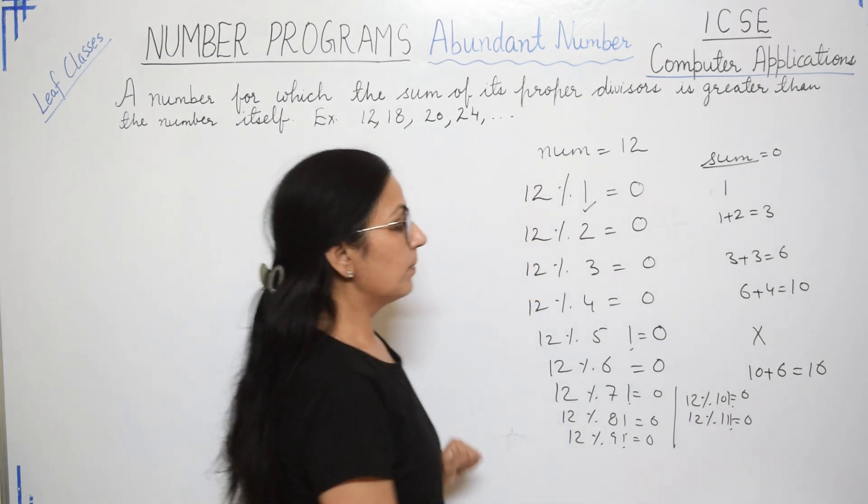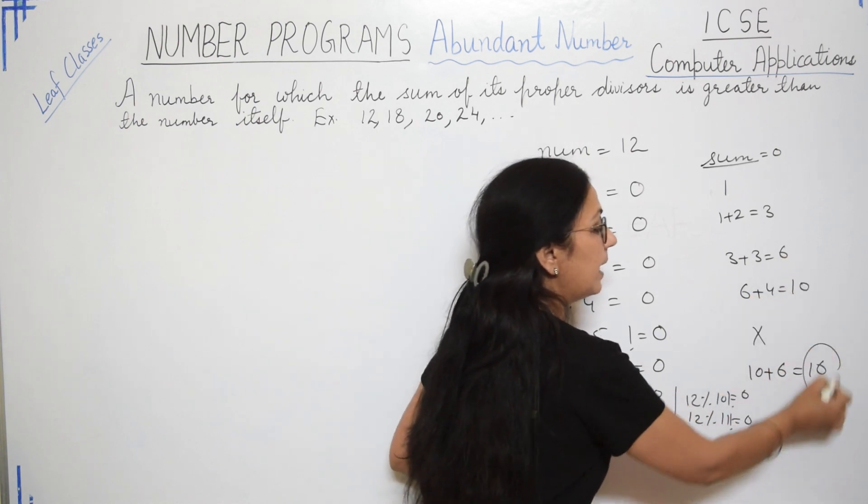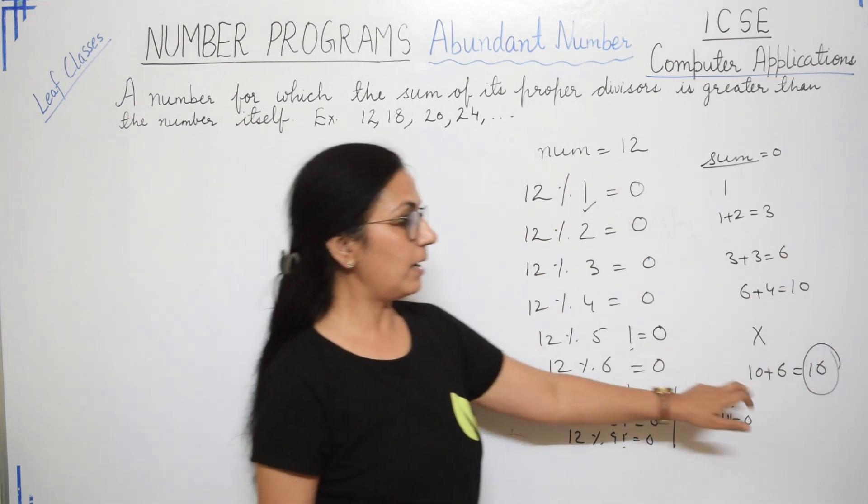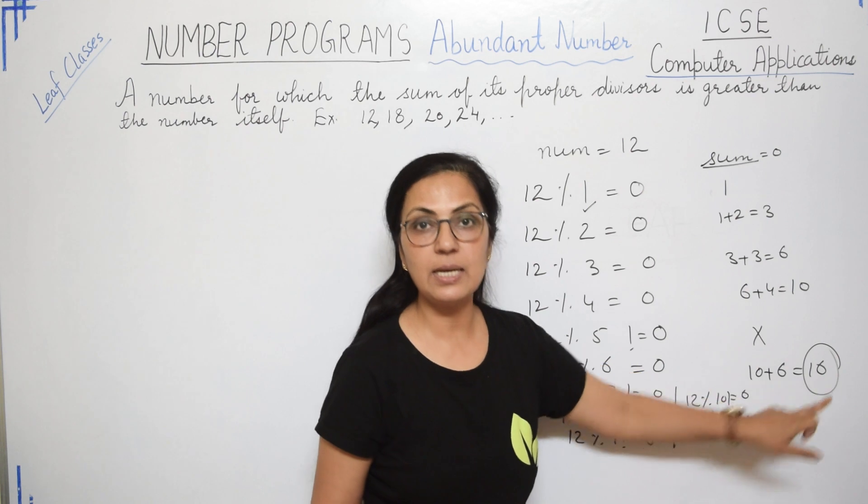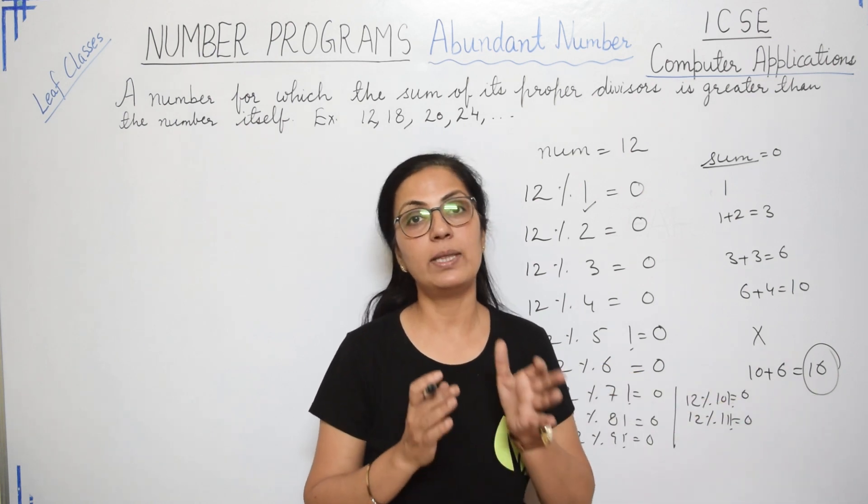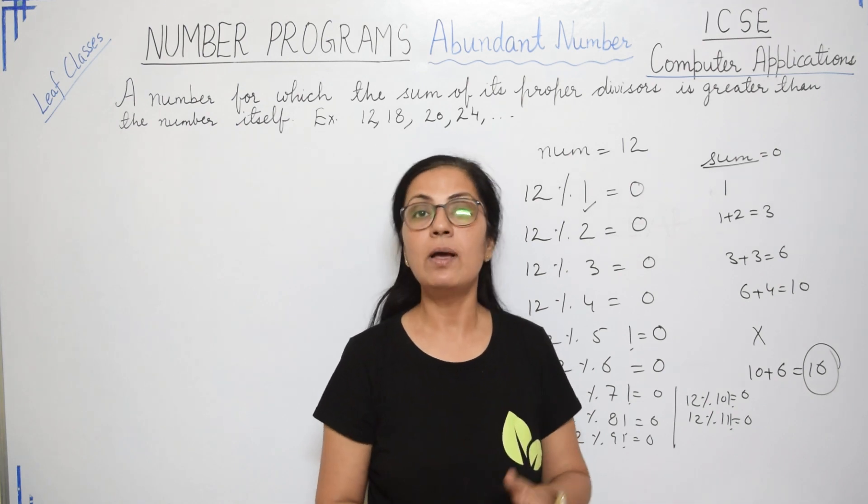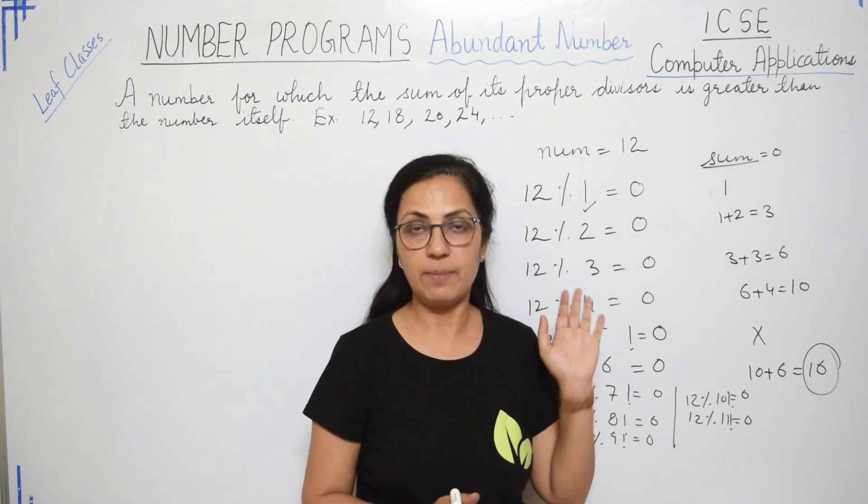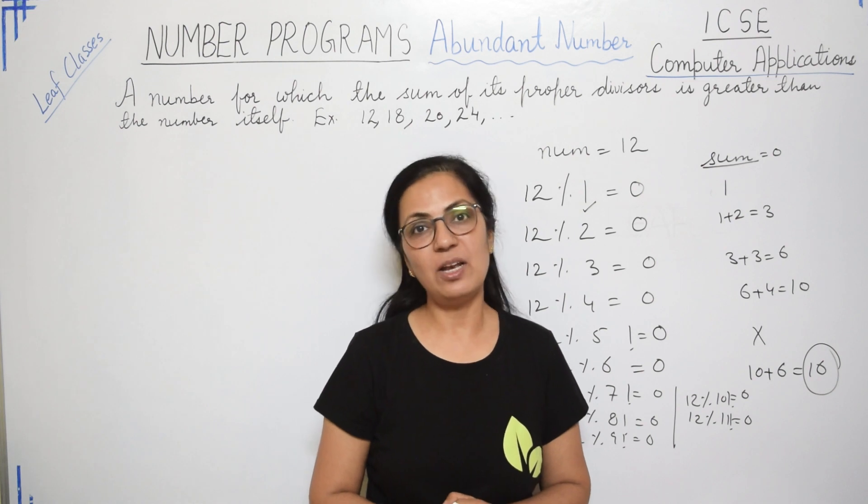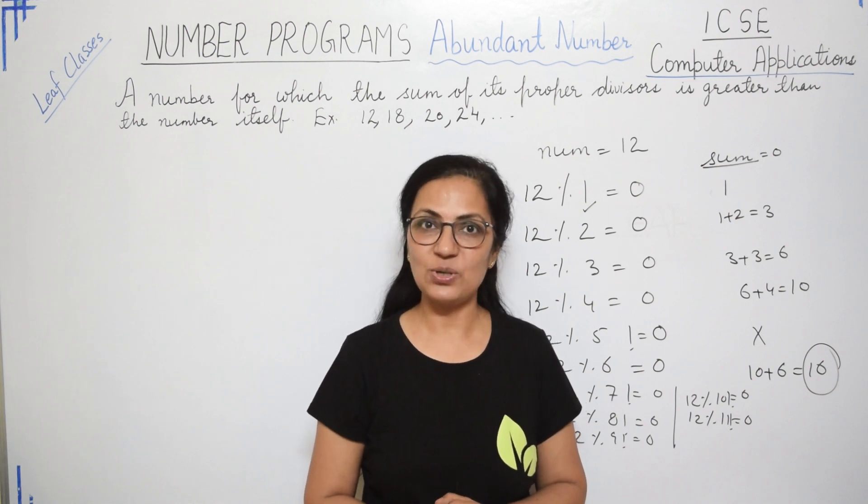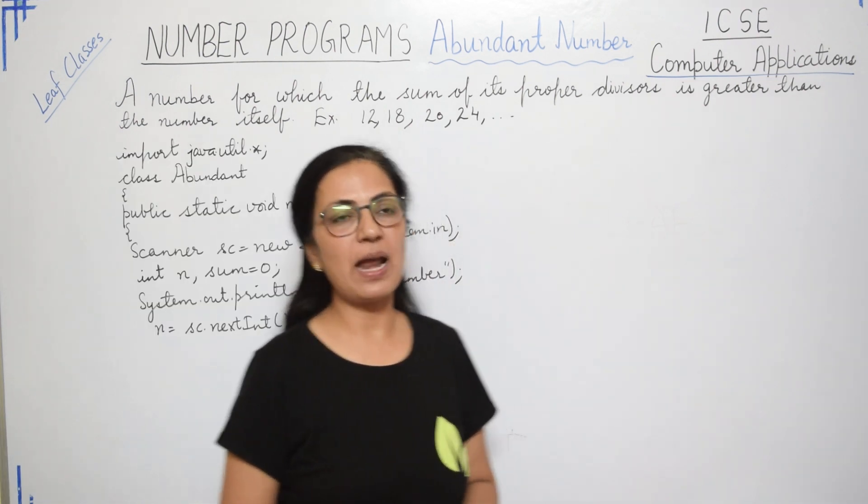So after the entire loop in sum variable we have got 16. So we will be checking whether 16 is more than 12 or not. Yes, 16 is more than 12. So it is abundant number. I hope the logic for this number is clear to you. Now let us start with the programming statements.